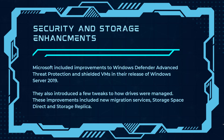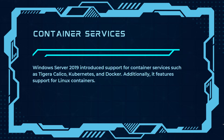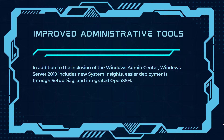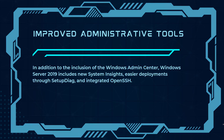Windows Server 2019 also brought security and storage enhancements, including improvements to Windows Defender Advanced Threat Protection and Shielded Virtual Machines, along with tweaks to drive management through new migration services, Storage Spaces Direct, and Storage Replica. Additionally, Windows Server 2019 introduced container services support — including Tigra, Kubernetes, and Docker — as well as Linux container support. Improved administrative tools included new System Insights, easier deployment through setup dialog, and integrated OpenSSH.